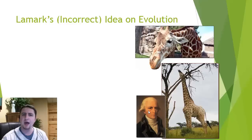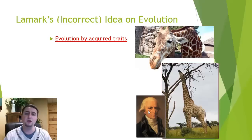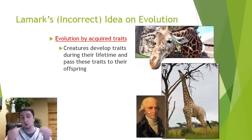Lamarck incorrectly had this theory that evolution occurred by acquired traits. That means that creatures or organisms developed traits during their lifetime and then passed those acquired traits onto their offspring.